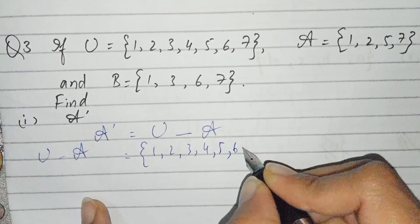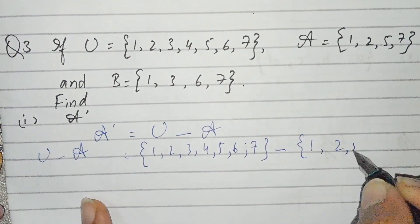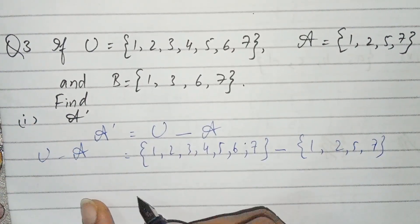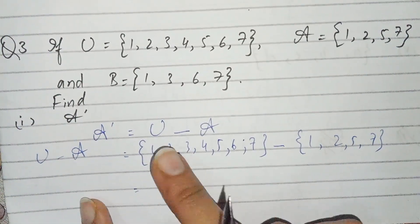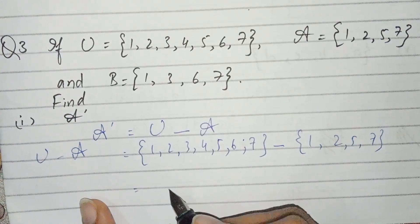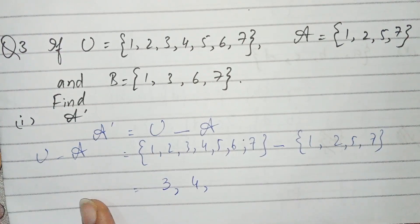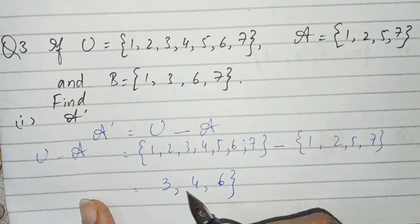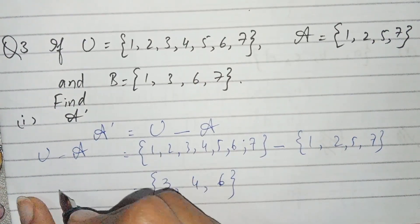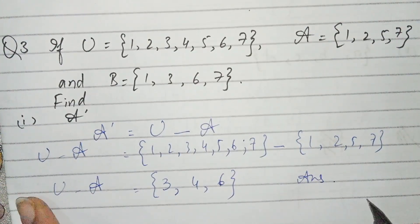U is {3,4,5,6,7} and A is {1,2,5,7}. We write those values present in U but not in A, so we get {3,4,6}. This is A complement and the answer to part number one.